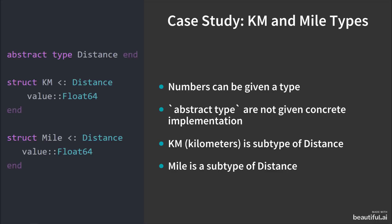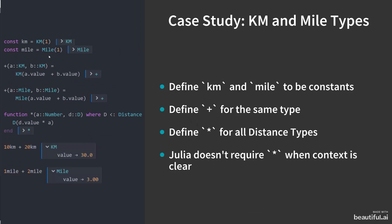Here is an example. Here I'm defining an abstract type called distance. I'm also defining two subtypes of distance — one km and one mile. They both contain one value of type float64. As an example, I'm defining km as a type of km with a value 1, and mile as a type of mile with value 1.